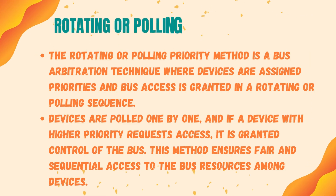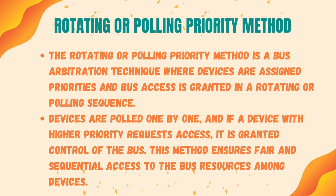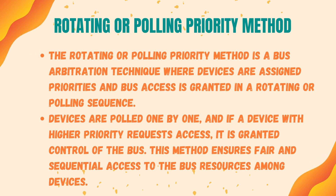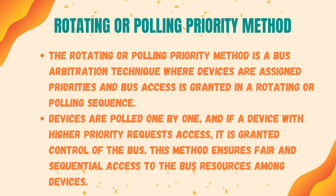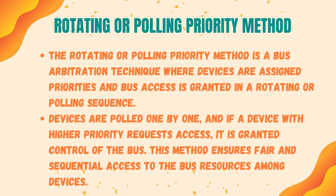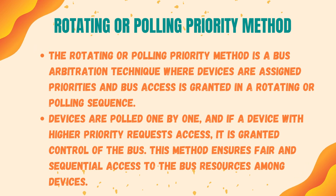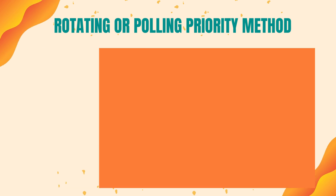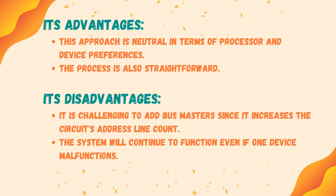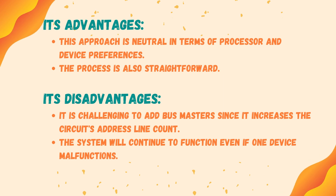The rotating or polling priority method is a bus arbitration technique where devices are assigned priorities and bus access is granted in a rotating or polling sequence. Devices are polled one by one, and if a device with higher priority requests access, it is granted control of the bus. This method ensures fair and sequential access to bus resources. Advantages include that this approach is neutral in terms of processor and device preferences, and the process is straightforward.